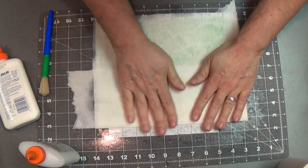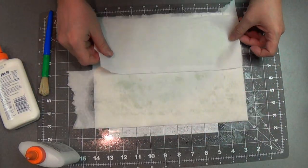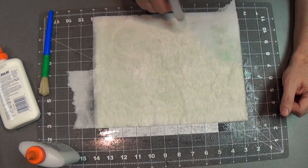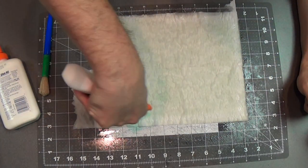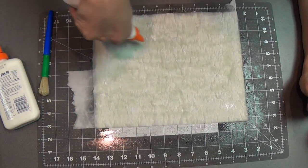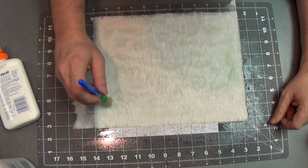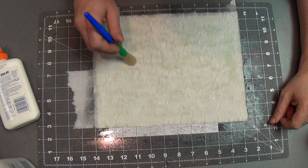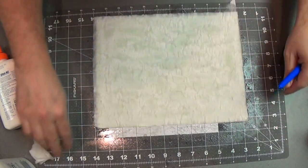Another layer of toilet paper. Add some water, 50-50 glue, kind of pat it down a bit, push down with the brush. Got some really nice texture on there.